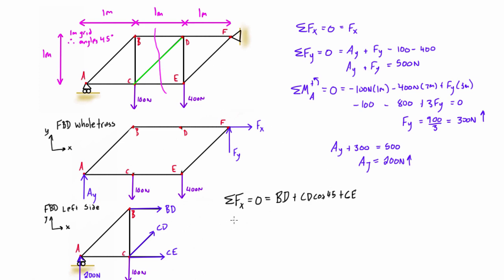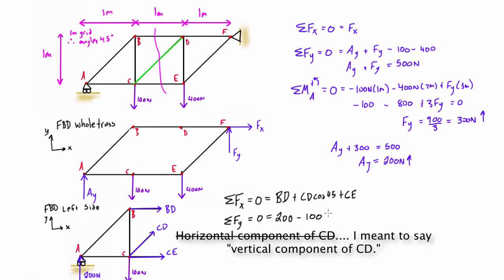We need to go one step further and take the sum of forces in the y direction. We have positive 200, negative 100, and then BD and CE don't have vertical components, it's just CD. So we'll take the vertical component of CD, which is CD sin 45, and that's all equal to zero.